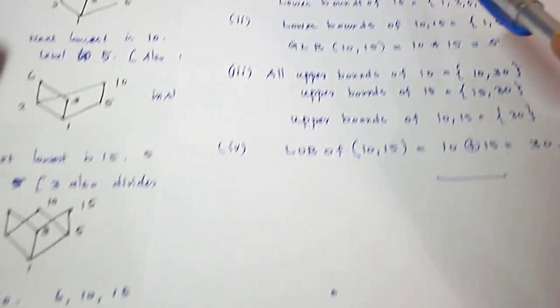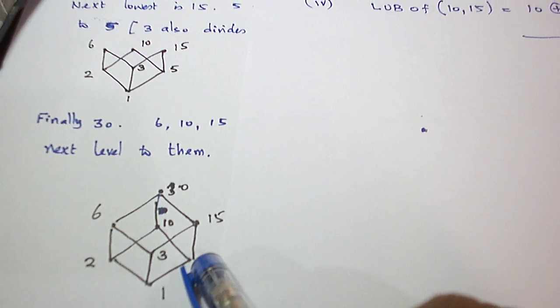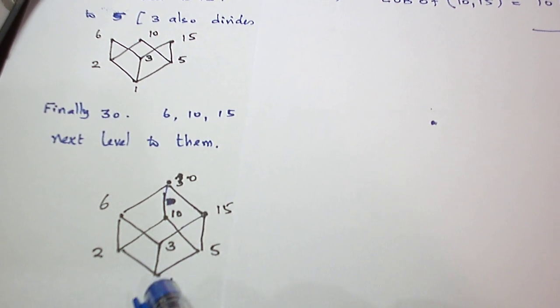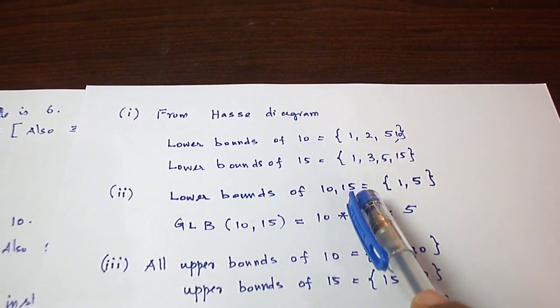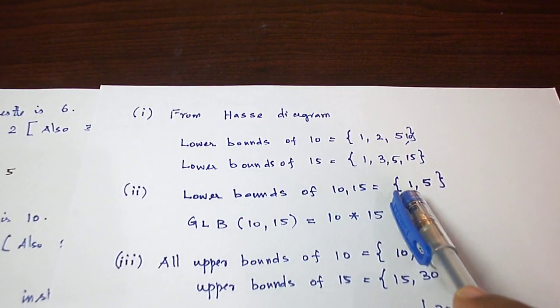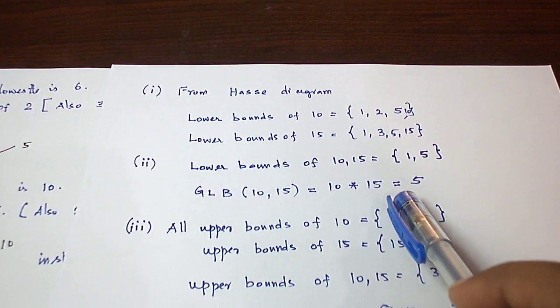And for lower bounds of 15, 3 is a lower bound, 5 is a lower bound, 1 is a lower bound. So 1, 3, 5, 15 are the lower bounds. Common lower bounds are 1 and 5, and greatest lower bound is 5.